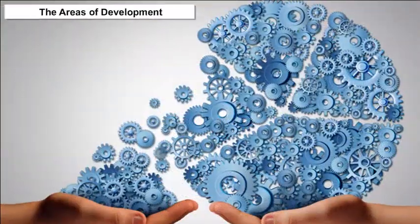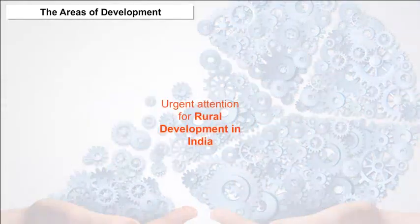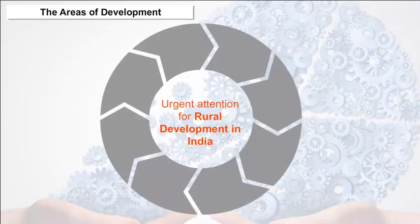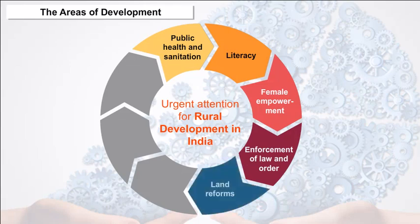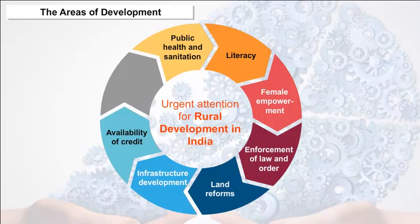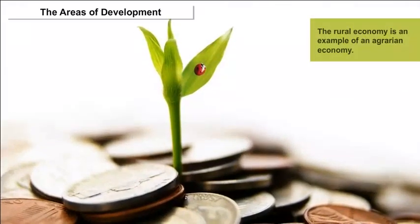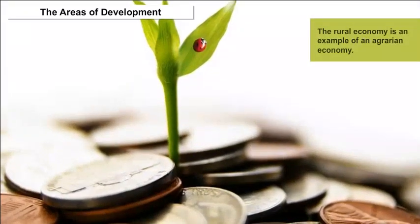The areas requiring urgent attention for rural development in India include Public Health and Sanitation, Literacy, Female Empowerment, Enforcement of Law and Order, Land Reforms, Infrastructure Development like Irrigation, Rural Electrification, Availability of Credit, Eradication of Poverty, and so on. The Rural Economy is an example of an agrarian economy.